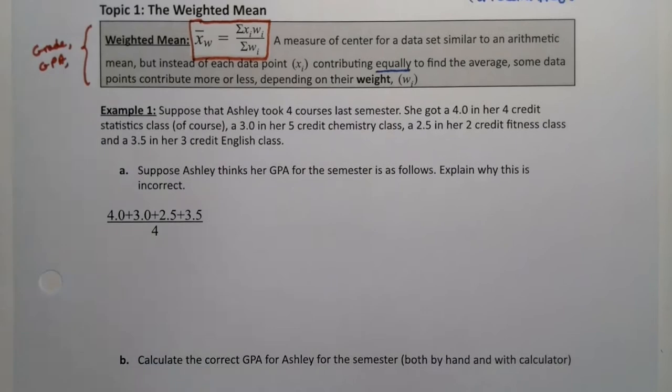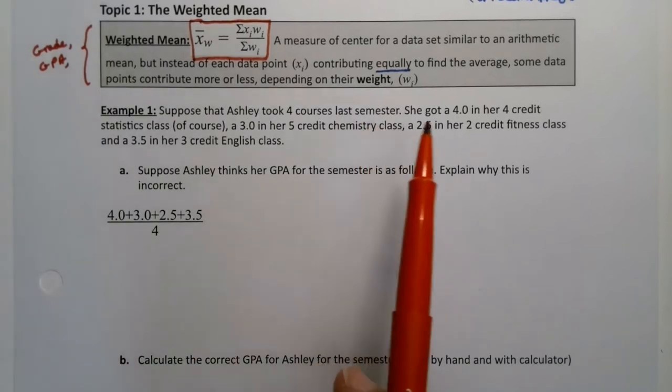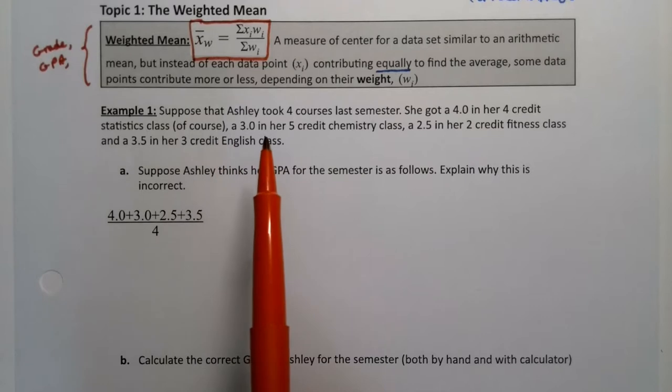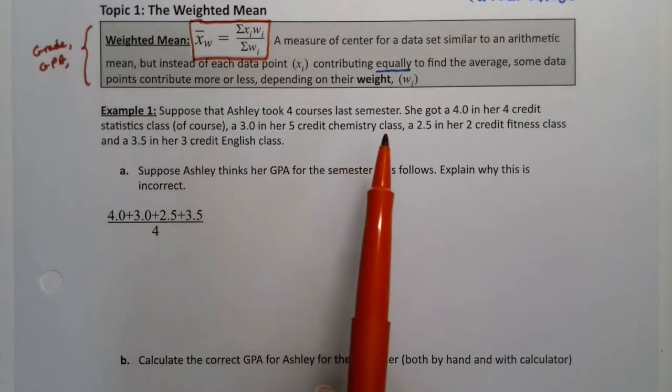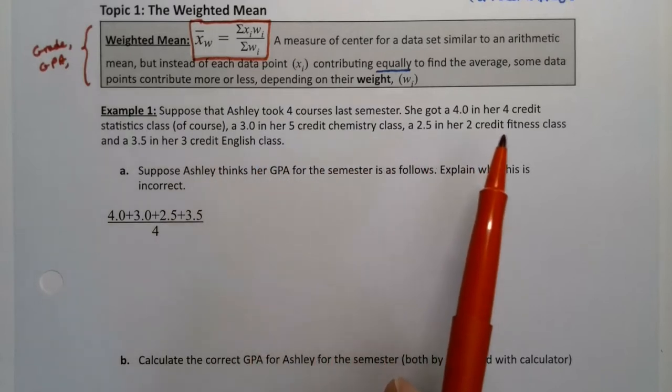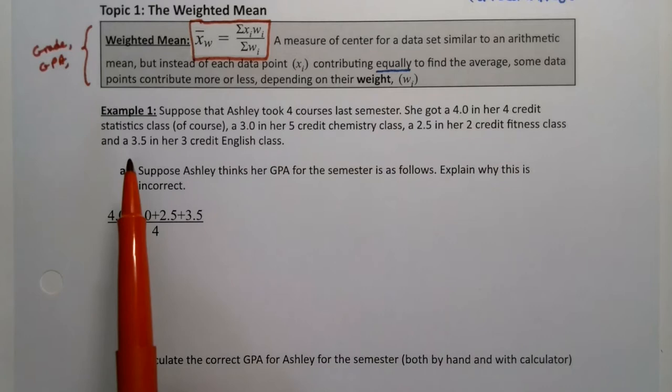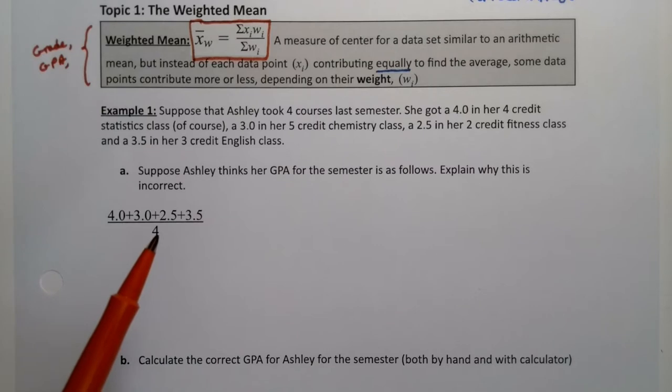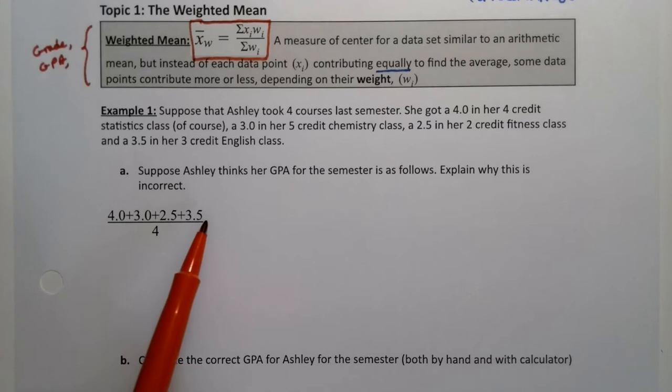Suppose that Ashley took four courses last semester. She got a 4.0 in her four credit statistics class, a 3.0 in her five credit chemistry class, a 2.5 in her two credit fitness class, and a 3.5 in her three credit English class. Ashley thinks her GPA for the semester is 4.0 plus 3.0 plus 2.5 plus 3.5 divided by four because she had four classes. Explain why it's incorrect.